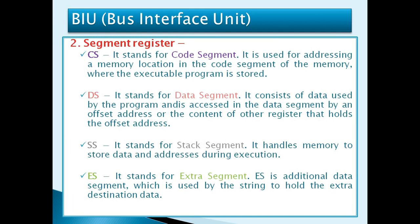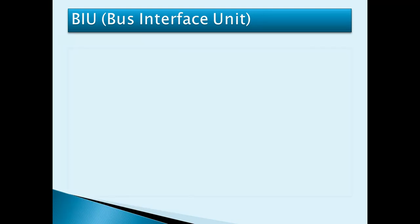The BIU also contains Segment Registers. The first is CS, the Code Segment, used for addressing a memory location where the executable program is stored. The second is DS, the Data Segment, accessed by the program using an offset address or the content of other registers that hold the offset. The third is SS, the Stack Segment, which handles memory to store data and addresses during execution. The fourth is ES, the Extra Segment, an additional data segment used by string operations to hold the extra destination data.